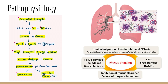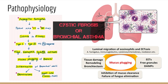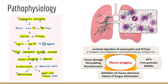Coming to the pathophysiology: the fungus Aspergillus fumigatus is generally seen in patients who are known cases of cystic fibrosis or bronchial asthma, with bronchial asthma being more common. These fungi colonize in the airways and then the hypersensitivity response is seen, where Type 1 hypersensitivity antibody response is more common than Type 3.